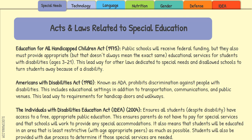Moving forward to 1990, we have the Americans with Disabilities Act. This branched beyond education — it focused on prohibiting discrimination against people with disabilities especially in public arenas, which includes public education but also transportation, communication, and public venues. This is where mandated handicap doors, walkways, and accessible bathrooms came into play — any public venue had to have handicap accessible materials and avenues.